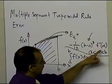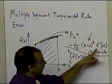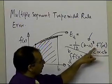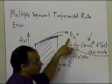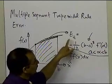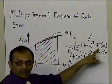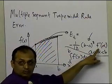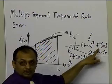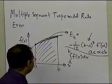This also tells you that since the second derivative appears in this formula for the true error, if you have a constant line or a straight line, the amount of true error you're going to get will be equal to zero.